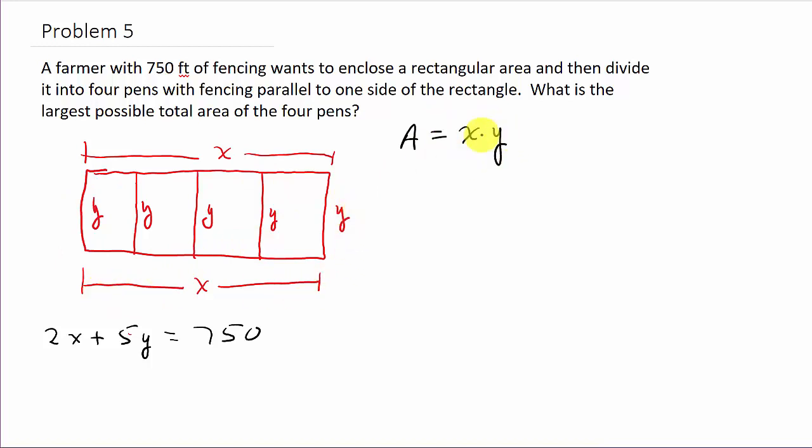Alright, so we need to take the derivative of this thing. Well, we want to get it all in terms of one variable. So, we'll get it all in terms of x. So, I'm going to solve this for y. So, I get 5y equals negative 2x plus 750. And so, y is negative 2 fifths x plus 150.